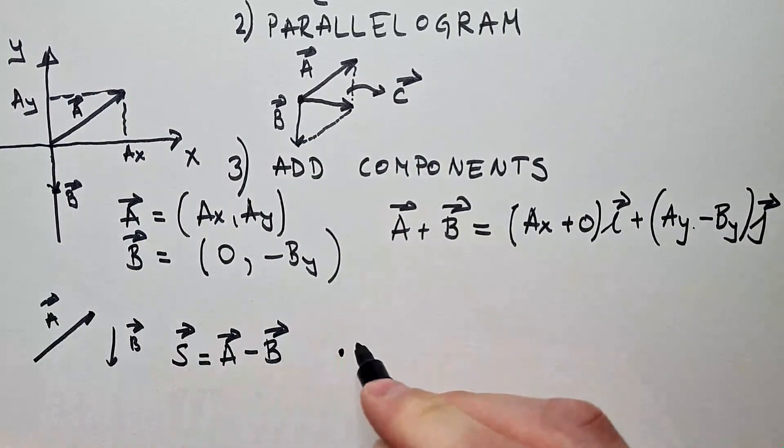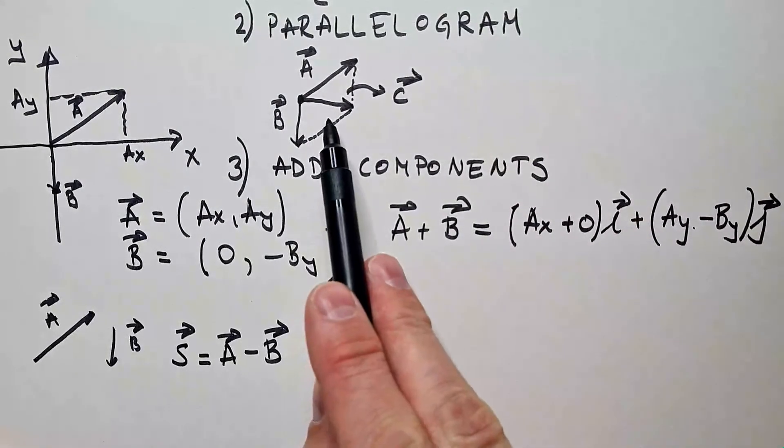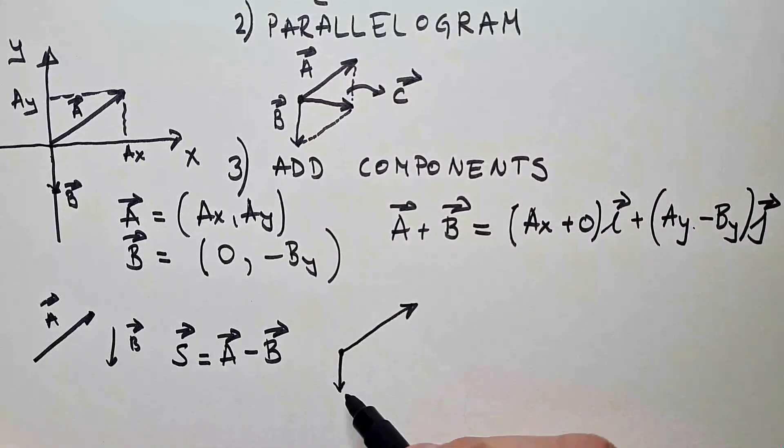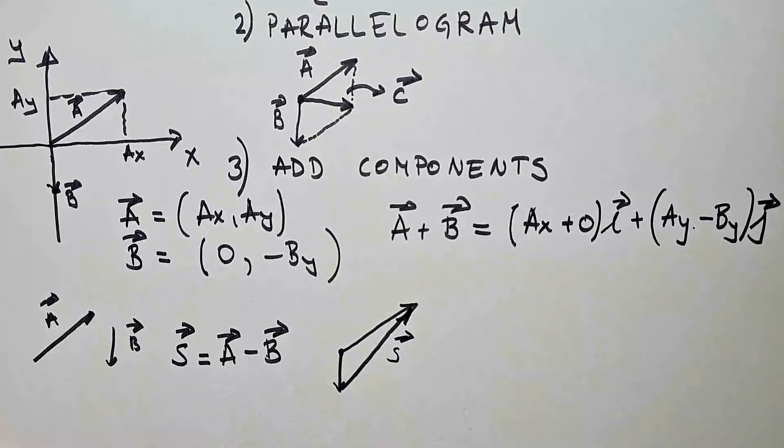We take vector A and we put vector B at the tail. So this is A, this is B, but now we do not make parallelogram as we did in the case of summing them up, but we connect them, so head to head, and this is vector S, that is A minus B.